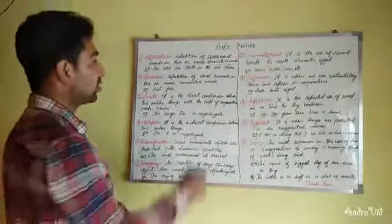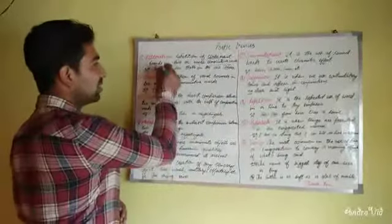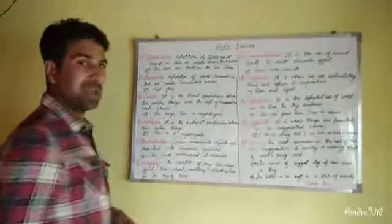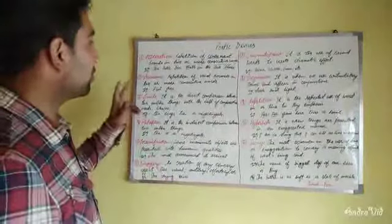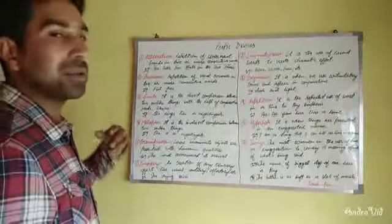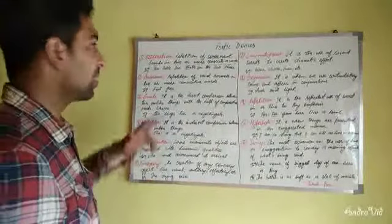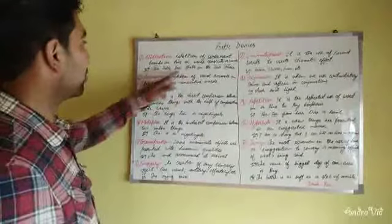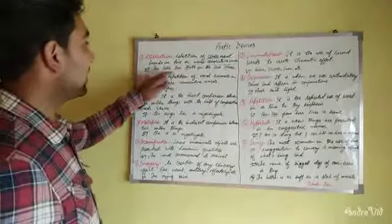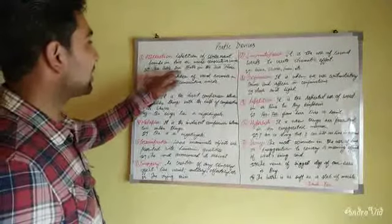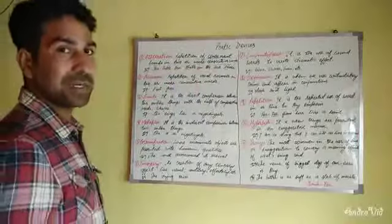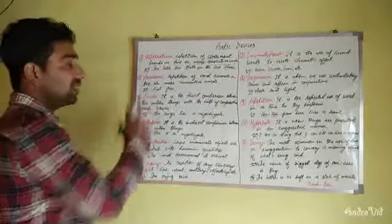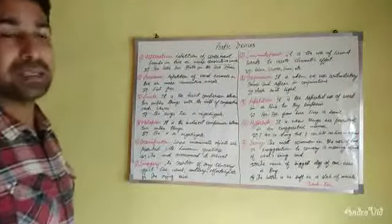In alliteration, it can be any one consonant sound repeated. In 'She sells seashells on the seashore,' the 'S' sound — as in 'she,' 'sells,' 'sea' — is repeated throughout. So we have alliteration here. Then there is assonance.